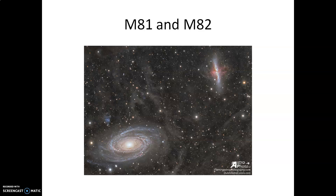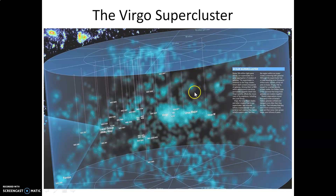The next group of galaxies over from the local group is called the M81 and M82 group. It is dominated by two large galaxies: the spiral M81 and the irregular galaxy M82. M82 in particular is quite interesting — there is a large amount of star formation taking place within it, visible from all the red activity in detailed photographs. Both the local group and the M81/M82 group are part of a much larger conglomeration called the Virgo supercluster, which consists of several thousand galaxies stretched out in a blob-like shape.